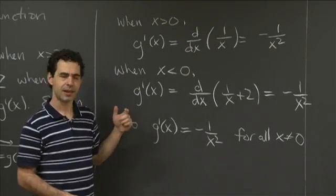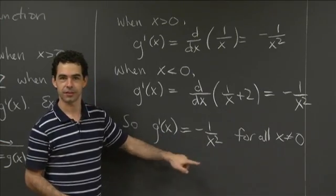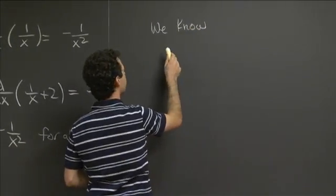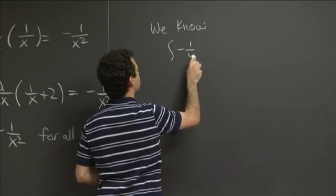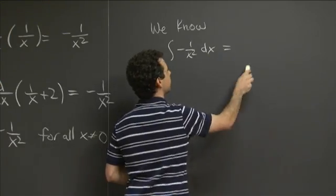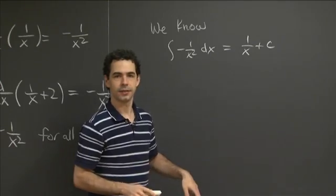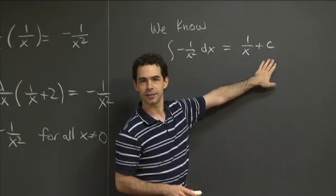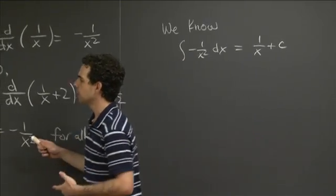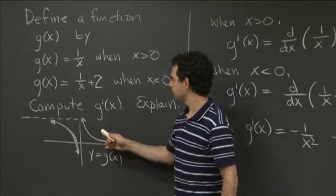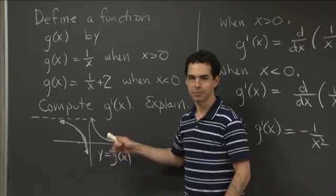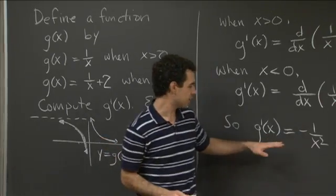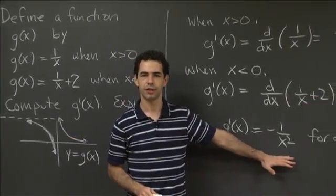Now, we've learned what the antiderivative of this function is. The antiderivative of minus 1 over x squared dx is 1 over x plus a constant. So we know that functions whose derivative is minus 1 over x squared are of the form 1 over x plus a constant. But this function g isn't of that form — you don't get g by taking 1 over x and just shifting it up or down. You've shifted it up on one piece and not on the other, yet the derivative of g is still minus 1 over x squared.